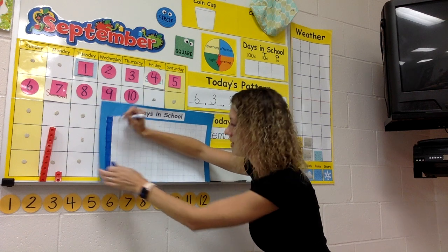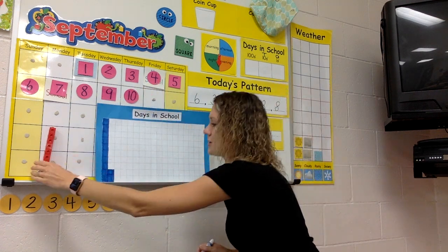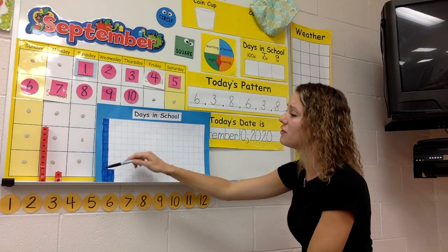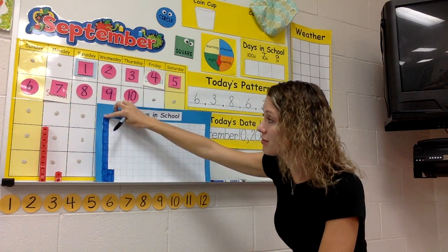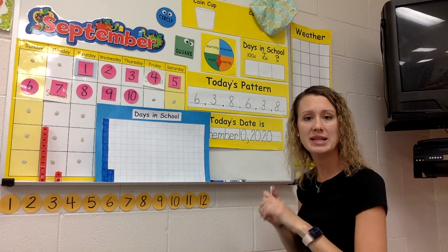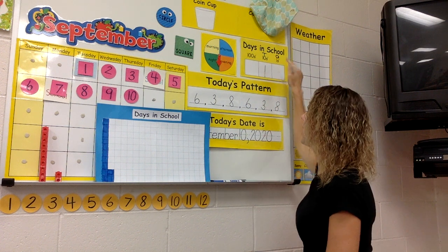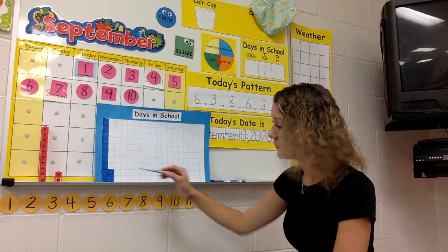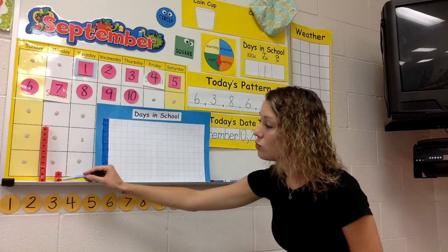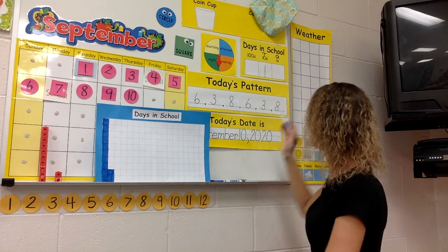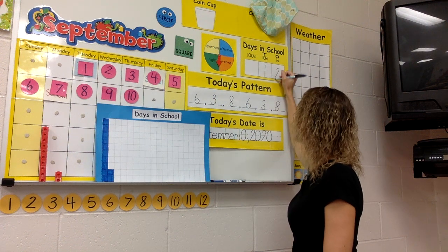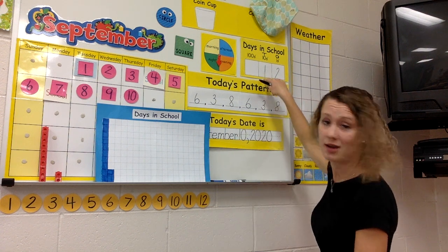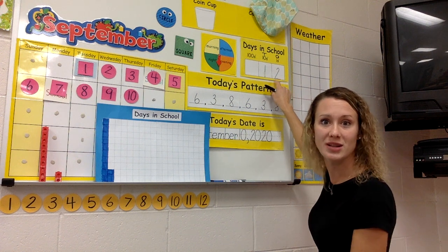Then I need to write the number 12. We always do the 10s first. How many full 10s do I have? How many full towers? One. I only have one full tower that reaches all the way up to the top, so I have one 10. Say: one 10. How many extra ones do I have? Two — one, two. So the two goes in the ones place. Say: two ones. The one is in the 10s place; the two is in the ones place.